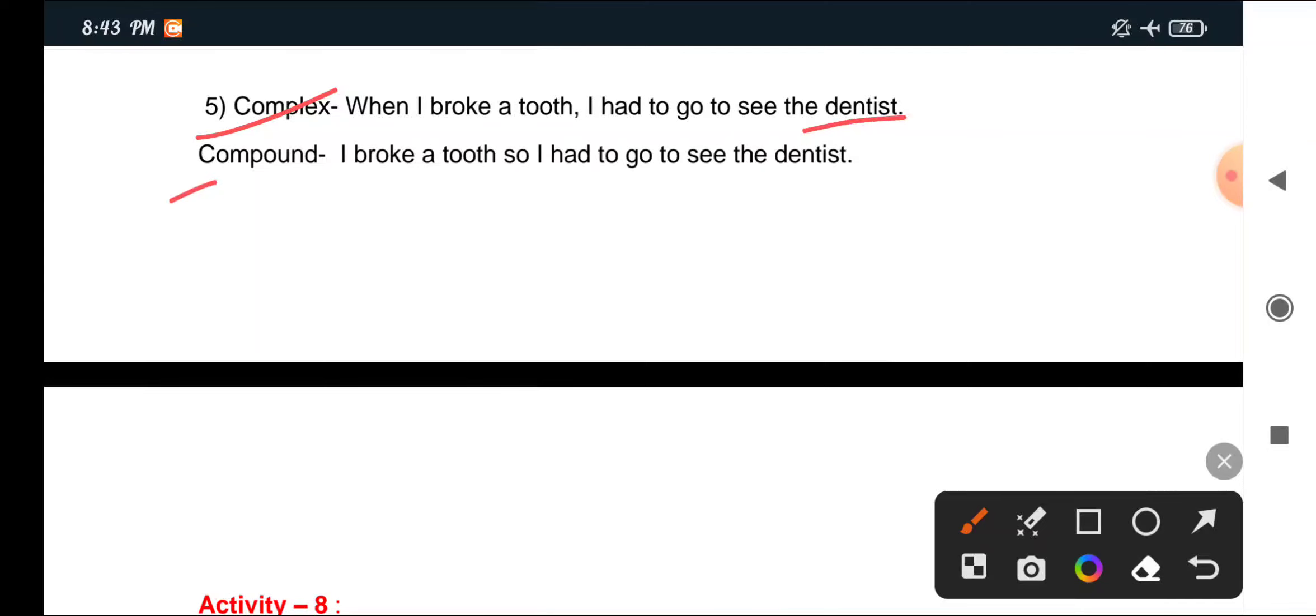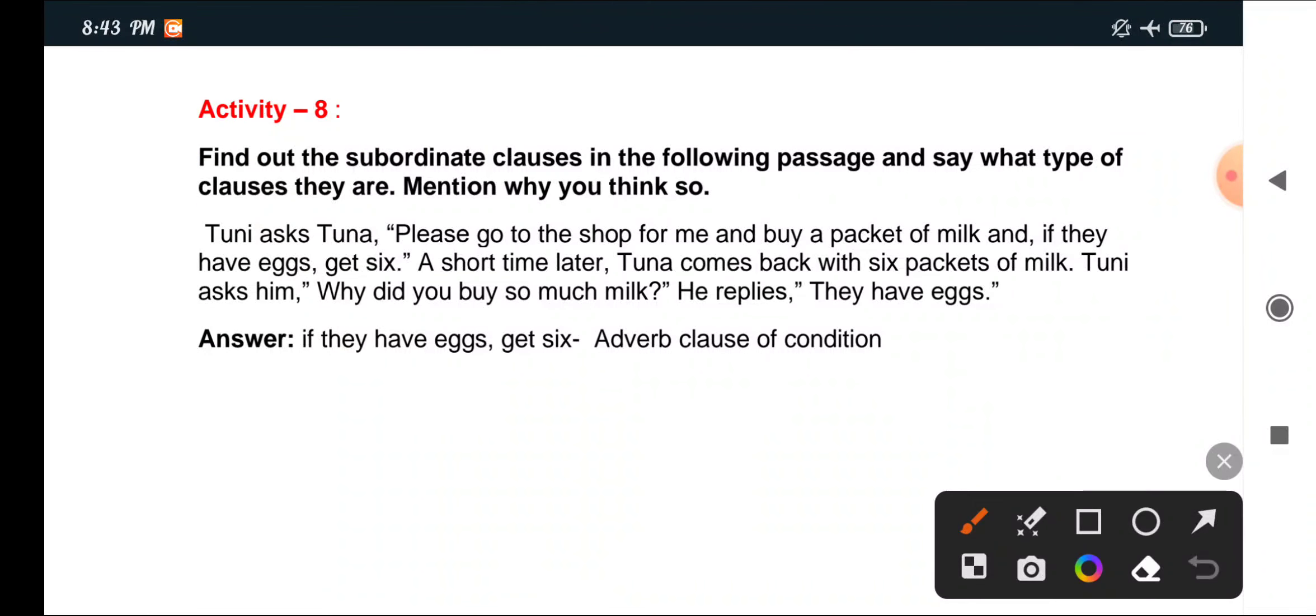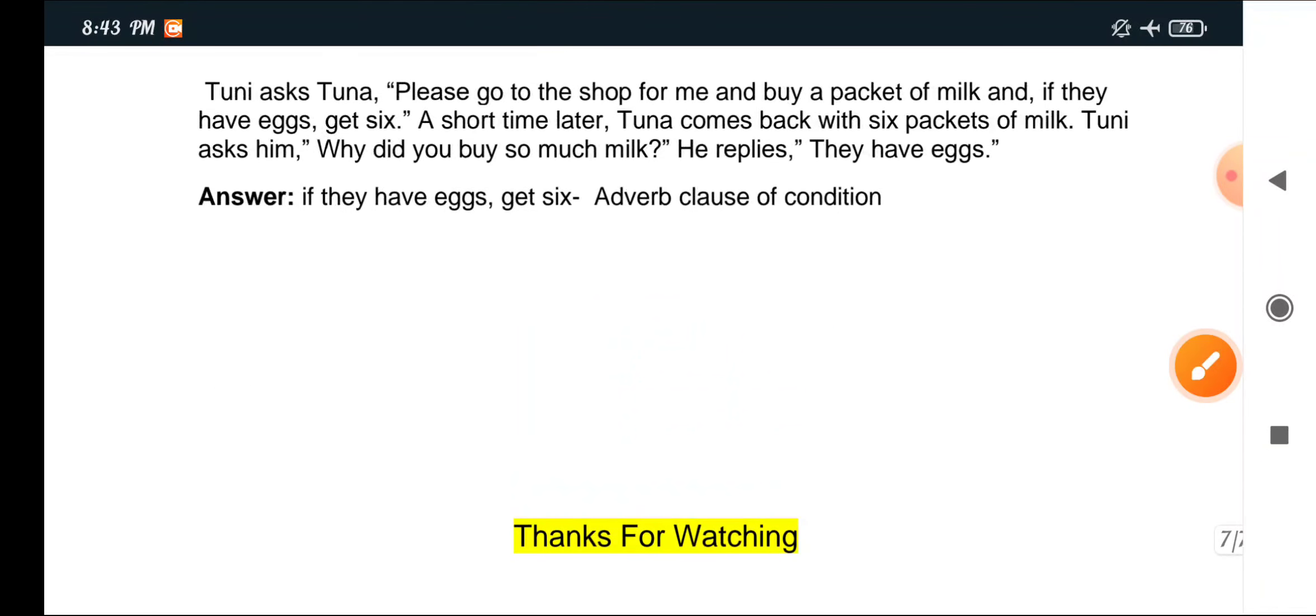Activity 8: Find out the subordinate clauses in the following passage and say what type of clauses they are. Mention why you think so. Tuna asks Tuna, please go to the shop for me and buy a packet of milk, and if they have eggs, get six. A short time later, Tuna comes back with six packets of milk. Tuna asked him, why did you buy so much milk? He replies, they have eggs. Answer: If they have eggs, get six - adverb clause of condition.